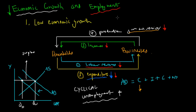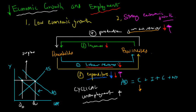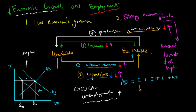Now let's look at the second concept — strong economic growth. Naturally this would be the opposite: high expenditure leads to greater demand and greater production of goods and services. Businesses would have to hire more labour, pay more income, and the cycle continues. Therefore there should be an increase in employment and a movement towards full employment.